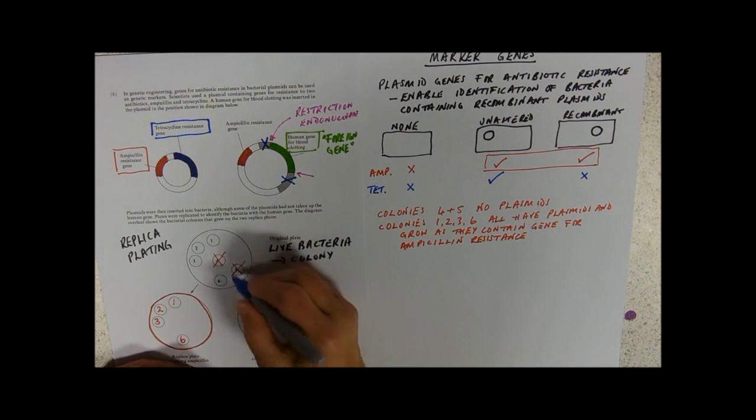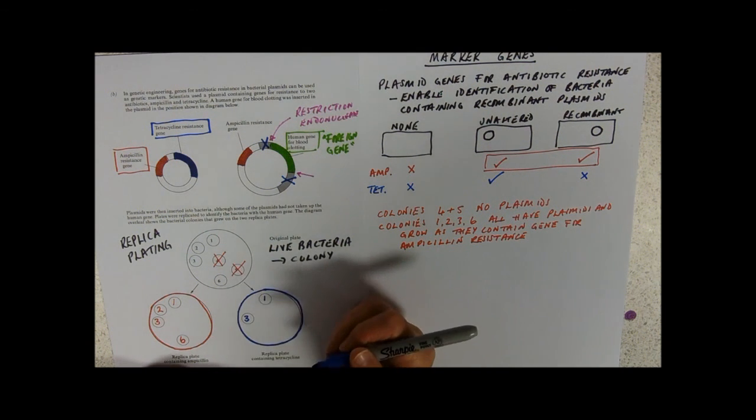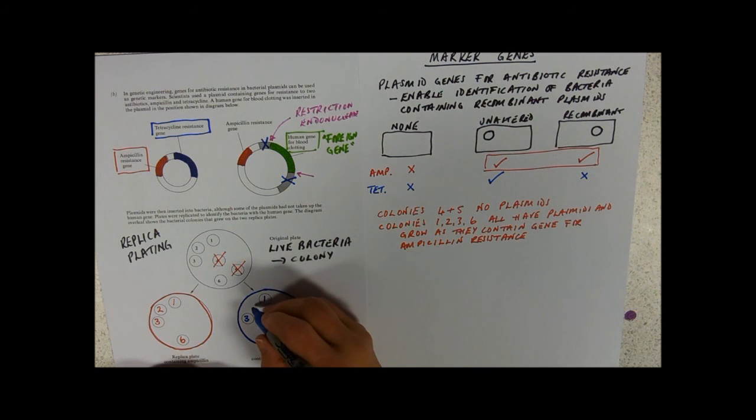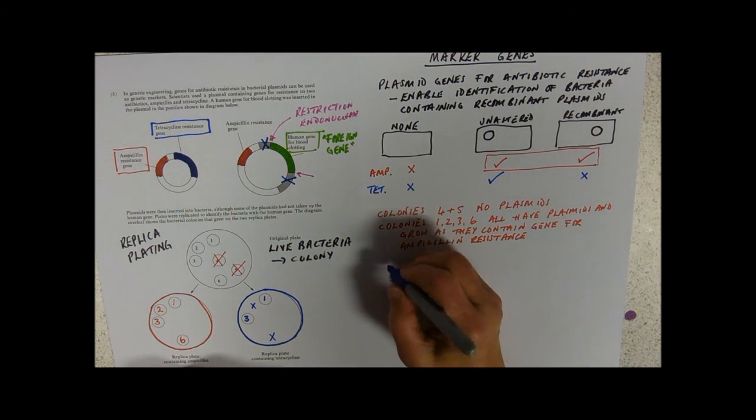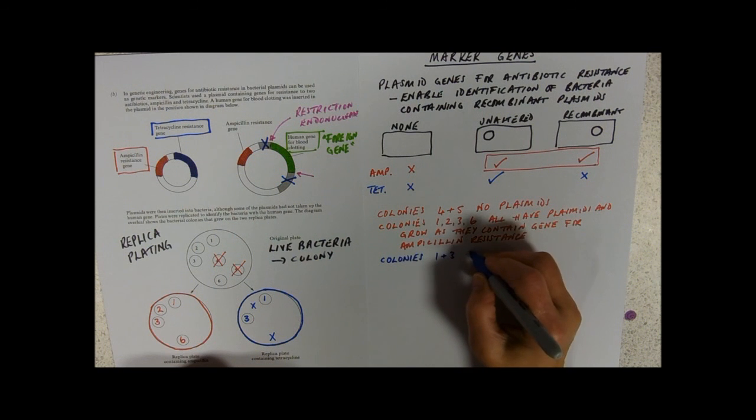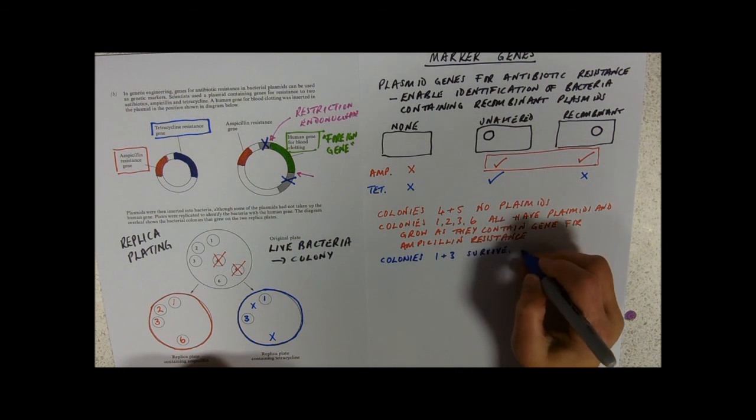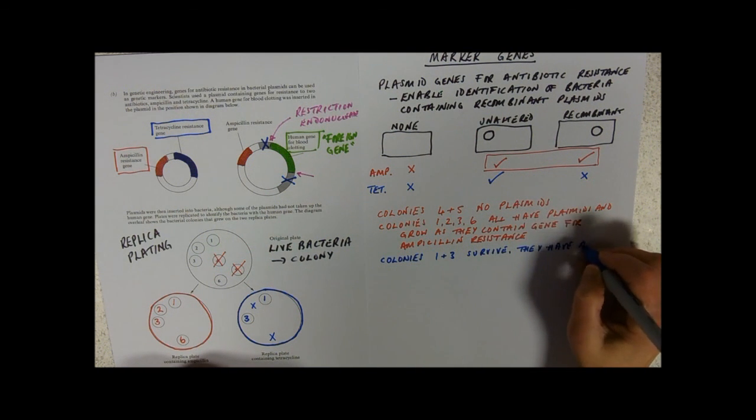So we copy the plate again. And you can either copy it from this one or from that one. It doesn't really matter. And this time we put our tetracycline antibiotic in. And here we can see that colonies one and three have survived. And colonies two and six that we were expecting to be there and there have died. So what does that plate tell us? What that plate tells us is that colonies one and three survive.